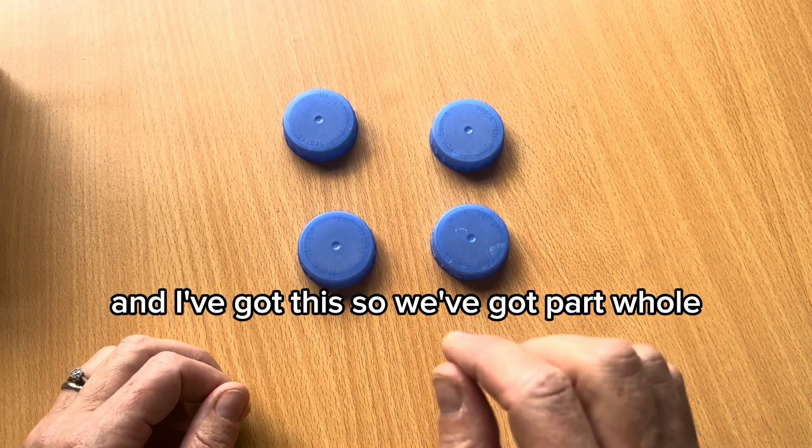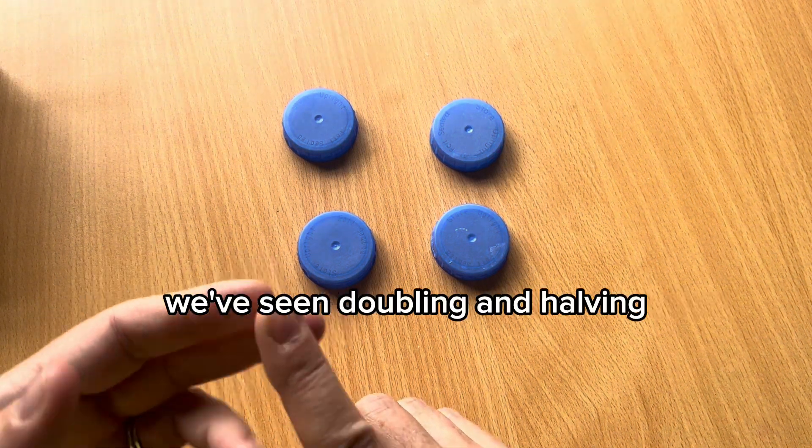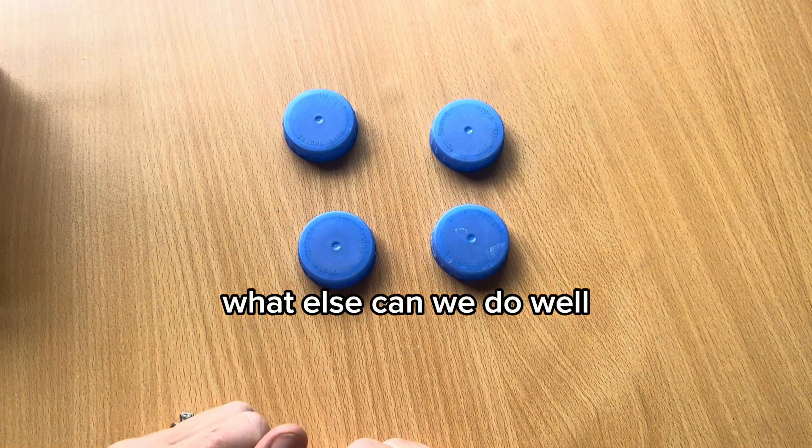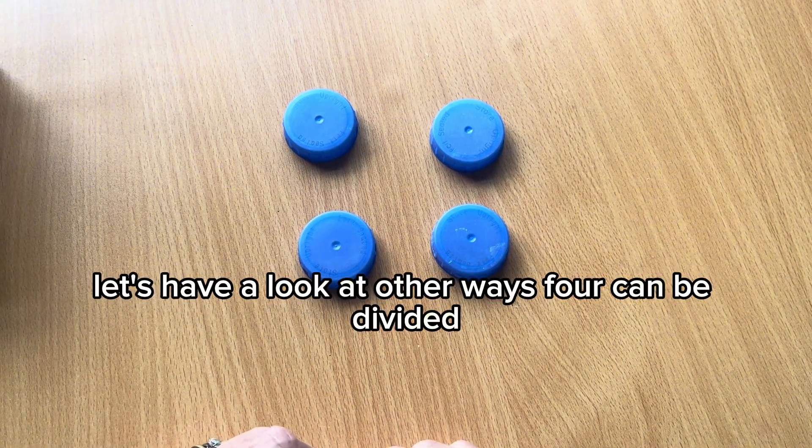So we've got part-whole. We've seen addition. We've seen subtraction. We've seen doubling and halving, which is multiplication and division. What else can we do? Well, let's have a look at other ways four can be divided.